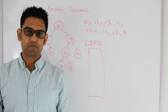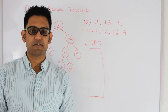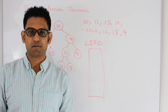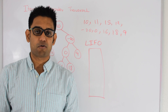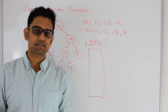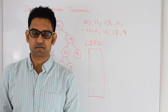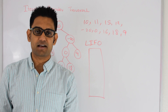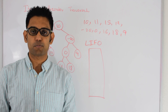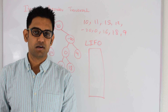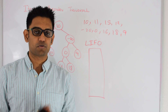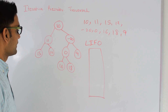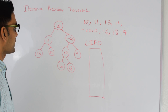In the recursive version, programming languages have the call stack which did most of the work for us. In the iterative version, we'll have to maintain our own stack. A stack is last-in first-out — the element which goes in last is first to come out. This is different from a queue, which is first-in first-out. So here I have my stack and let's see how this will work.